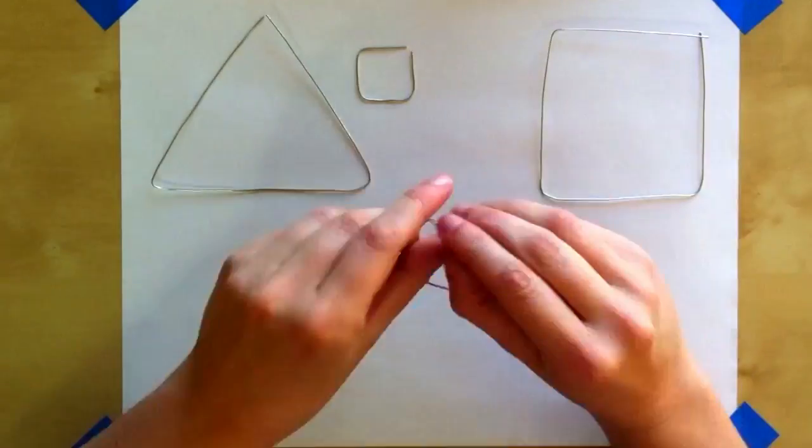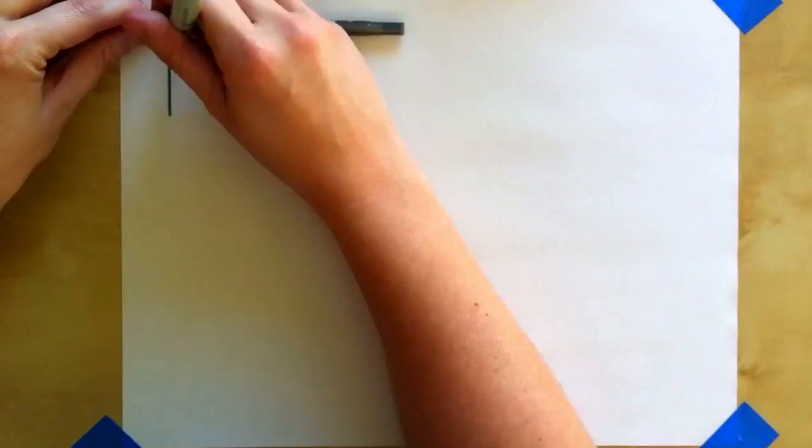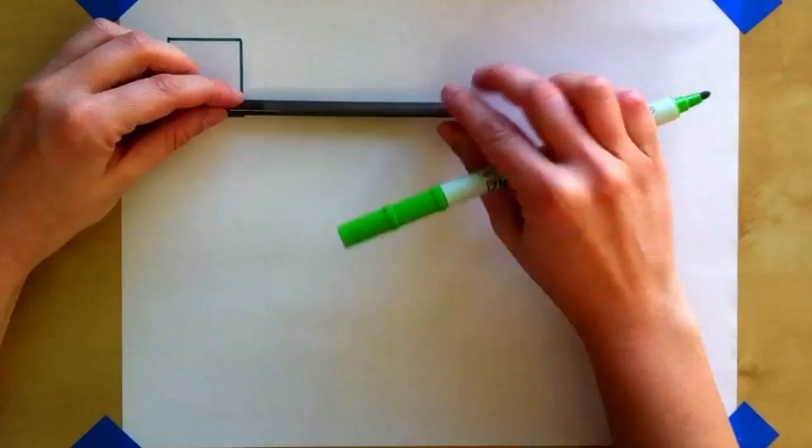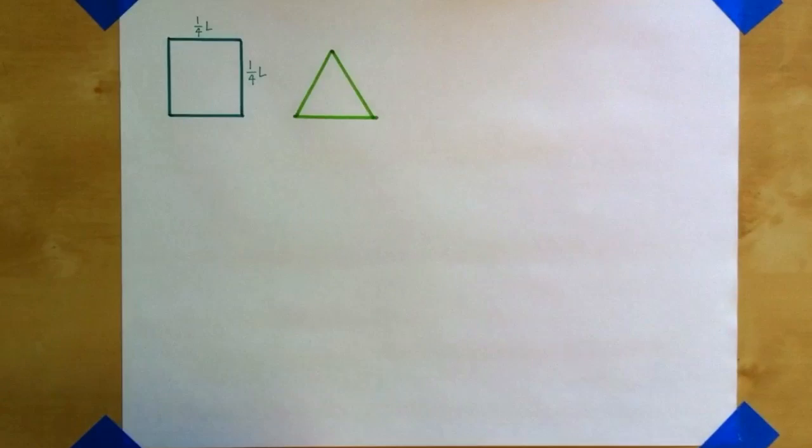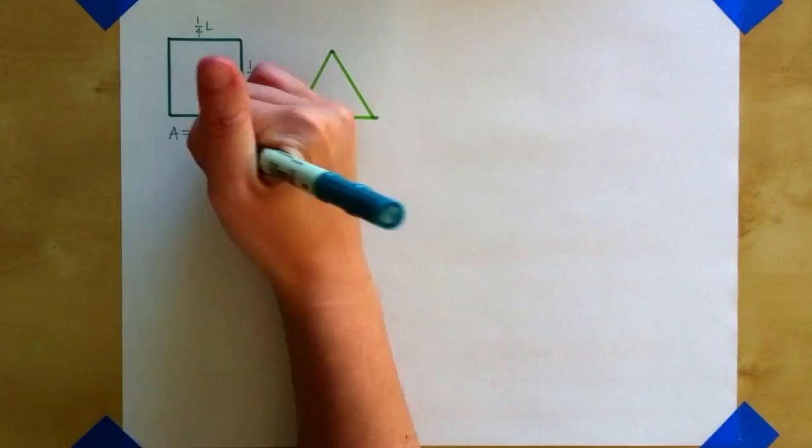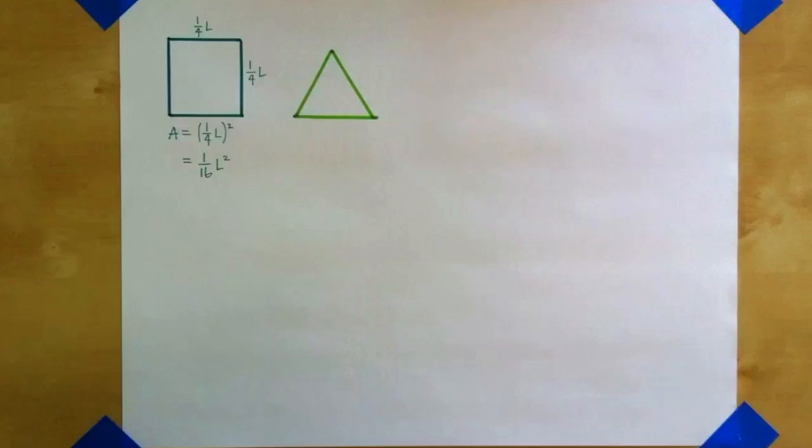If I use the piece of length L to form the square, that means each side of my square is length one-fourth L. To find the area of the square, I just multiply the length and the width together, and get one-sixteenth L squared.